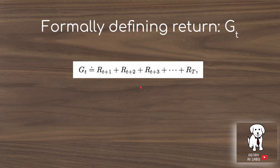Now that we understand transition probabilities, we formally define the expected reward or return, denoted G_t. In reinforcement learning we constantly receive a reward from the environment at every time step, so the total return is the summation of rewards achieved at each time step. For an episode with T time steps, it's simply the summation of all rewards up to time step T.